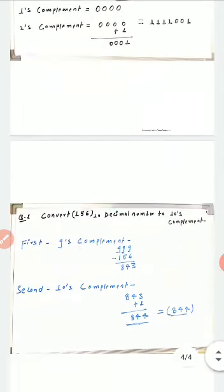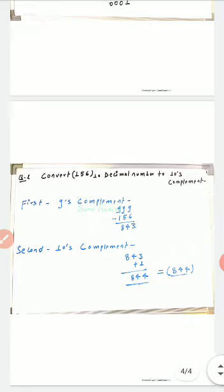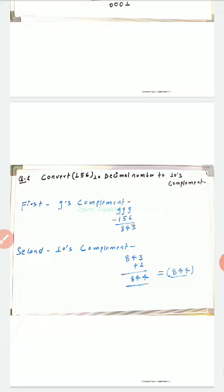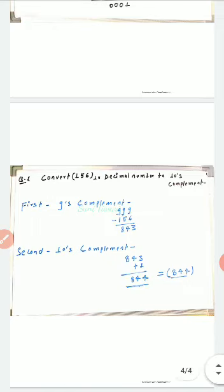Now the second question is related to the decimal number system: convert 156 decimal number into the tens complement. First we find the nines complement by subtracting 156 from 999, which gives 843. So 843 is the nines complement of 156. Since it is asking for the tens complement — similar to the twos complement — we add 1 into the nines complement: 843 plus 1 gives 844. So 844 is the tens complement of decimal 156.